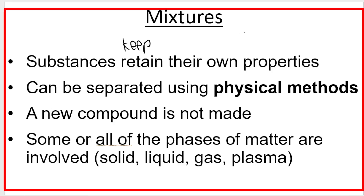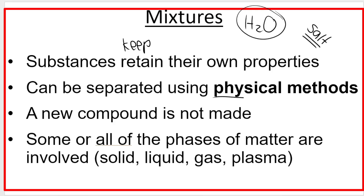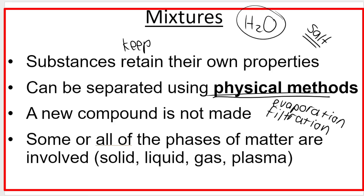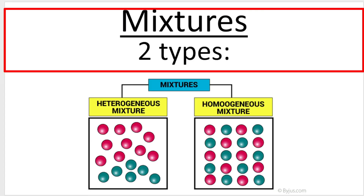In the salt water example, the water still has properties of water — it can still evaporate. The salt still has properties of salt. We can separate mixtures using physical methods; evaporation is one example, or something like filtration — if I pass the mixture through a filter, some of the stuff will be left behind and the other stuff will pass through. A new compound is not made. No chemical bonds. Some or all of the phases of matter may be involved. So let's look more closely at the two different types of mixtures.